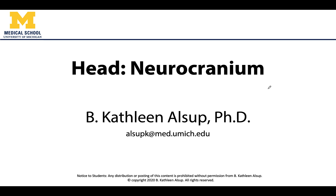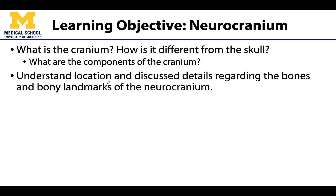Hello anatomy friends, this is Dr. Alsup. We are going to begin our discussion of regional anatomy or musculoskeletal anatomy, starting superiorly and making our way inferiorly — so we'll start with the head. We'll talk about bones, then joints, then muscles. We're going to start with the neurocranium, talk about what the cranium is, how it's different from the skull, what the components are, and then go through the bones of the neurocranium and specific bony landmarks.